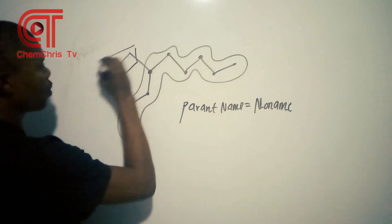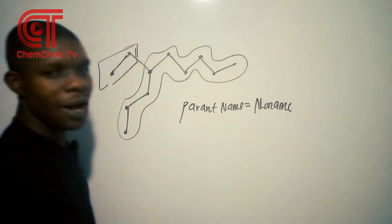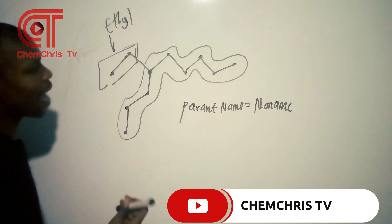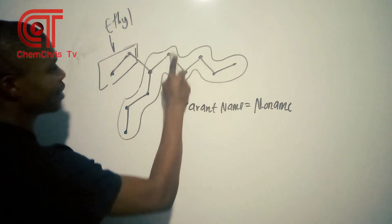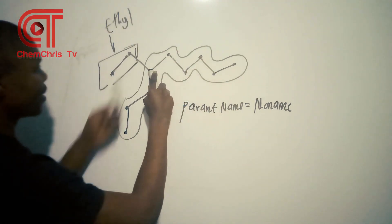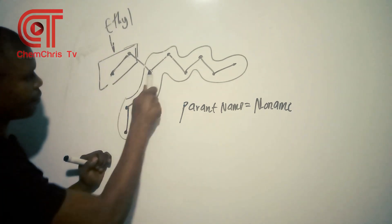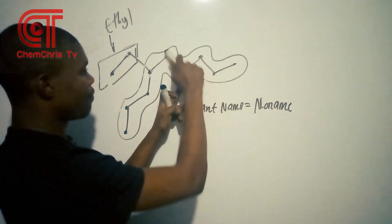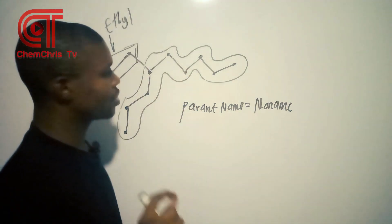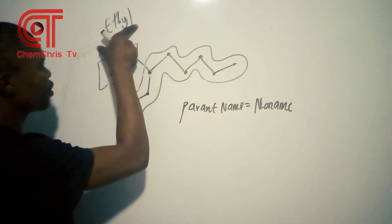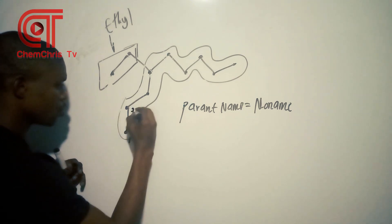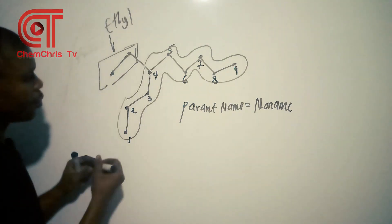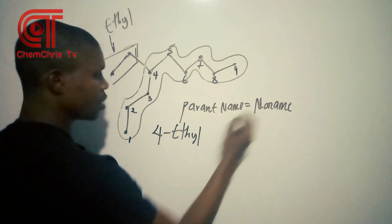Here we have two branch points. Counting from one end: the substituent is at carbon 4. Counting from the other end: 1, 2, 3, 4, 5, 6 — carbon 6. Starting from the direction that gives the lowest number, the substituent is at position 4. So we go with that numbering to minimize the substituent position.